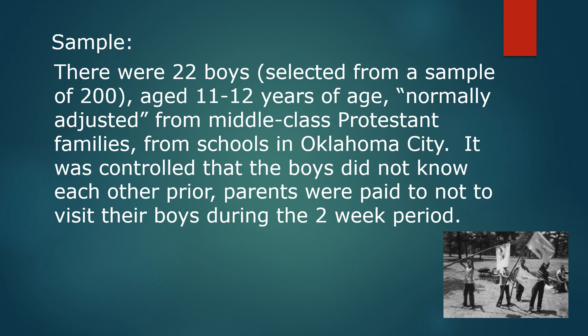The boys did not know each other prior to taking part in the summer camp, and the parents were paid not to visit the boys during the two-week period. The parents did know that it was an experiment, and therefore they gave fully informed consent for their children to take part. Please don't write as an ethical weakness that the boys didn't consent — the boys were aged 11 to 12 years old, so it was down to the parents to make that decision. The boys were matched when split into the Eagles and the Rattlers on things like IQ, teacher reports, behaviour, and so on.